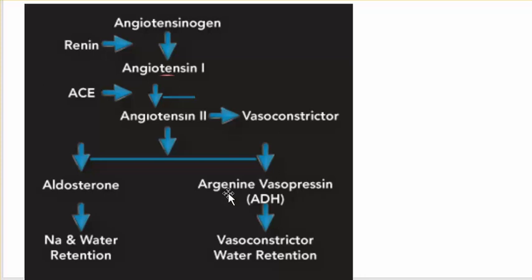The kidneys panic because they don't have enough pressure coming at them. They send out the renin, which turns angiotensinogen to angiotensin 1. The lungs are actually taking part in this too — they send out a little bit of ACE, and the ACE converts angiotensin 1 to angiotensin 2. Angiotensin 2 is a bit of a vasoconstrictor — like a boa constrictor — clamping down on the vasculature, on those little arterioles.